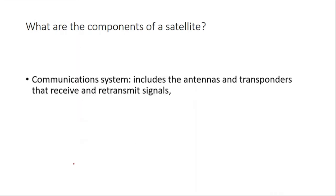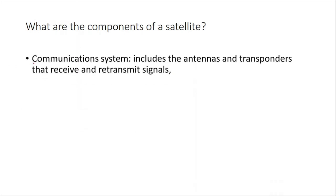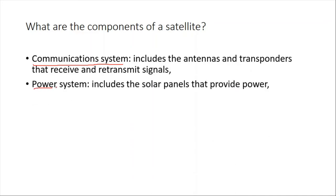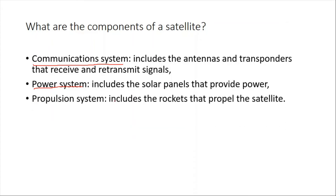There are three main components of a satellite. First is the communication system, which includes antennas and transponders that receive and transmit signals. Second is the power system, which includes solar panels that convert solar energy into electricity. Third is the propulsion system, which includes rockets used to change the direction or orbit of the satellite.